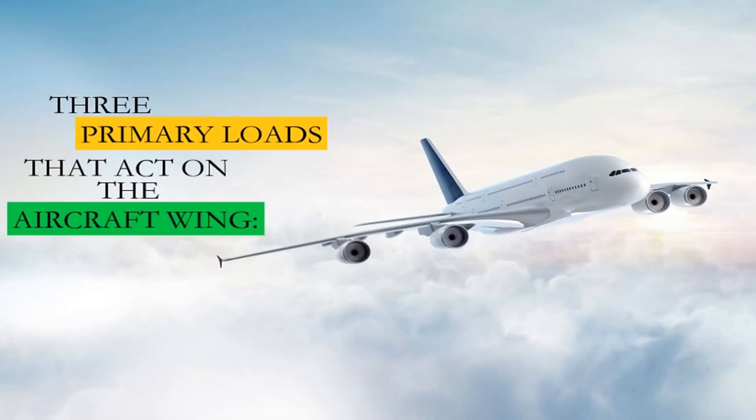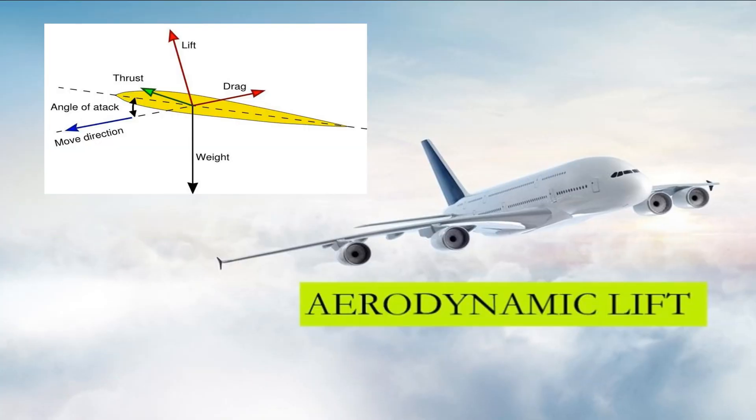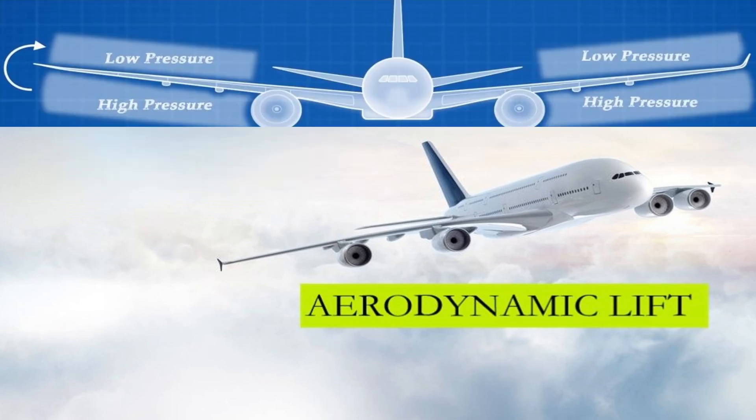There are three primary loads that act on an aircraft wing. The first is aerodynamic lift — a mechanical aerodynamic force produced by the motion of the airplane through the air. Lift acts through the center of pressure of the object and is directed perpendicular to the flow direction.